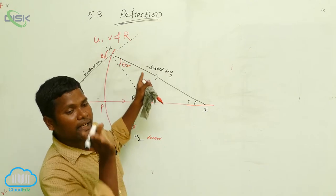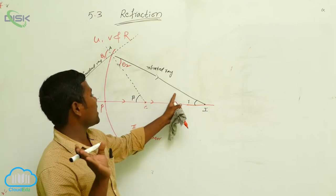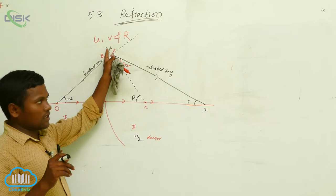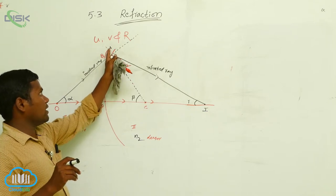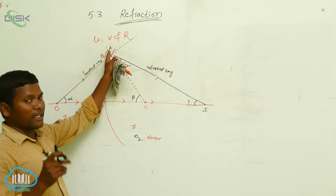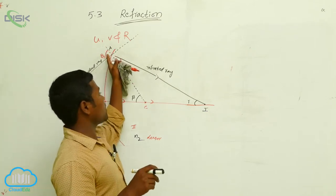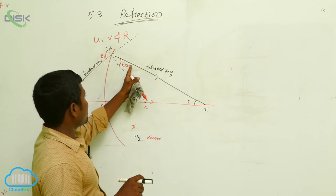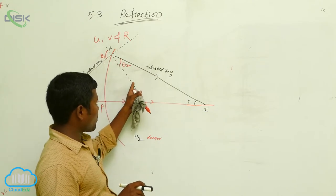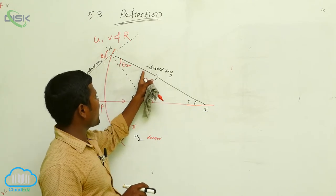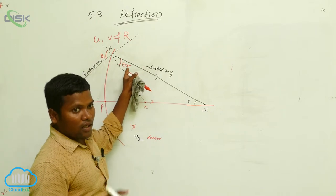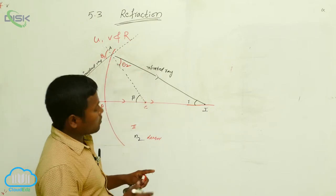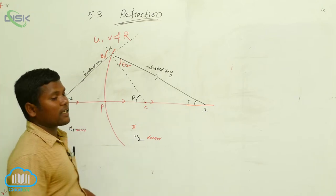The road is changing, meaning the medium is changing. Due to that, the ray is slightly bent. That is why this angle — the angle between the incident ray and the normal line — is called the incident angle. Again, the angle between the refracted ray and the normal line is called the refraction angle.